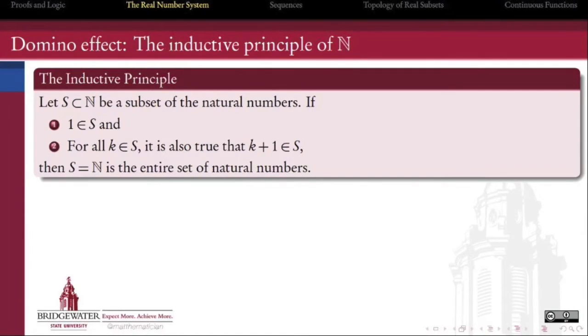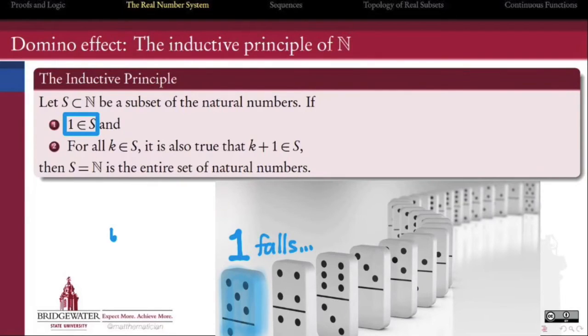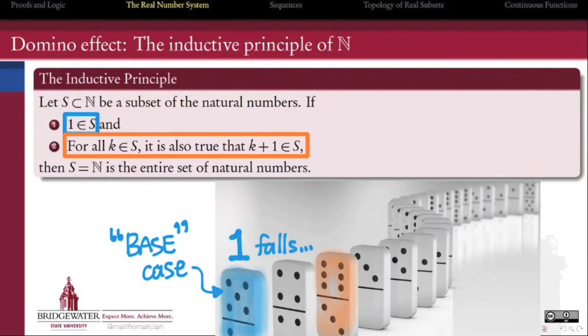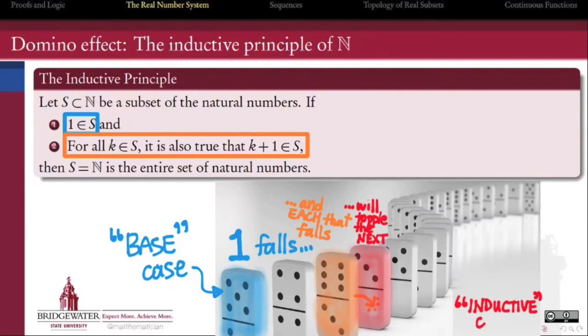We won't dwell for long on the principle of induction, but its precise statement is worth remembering. If S is a set of natural numbers that both contains one as an element, and for each of its elements also contains its successor, then we can conclude that S is the entire set of natural numbers.